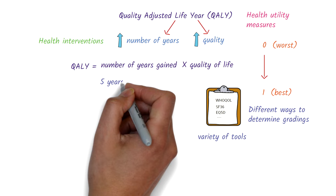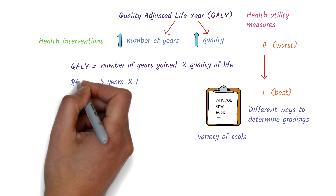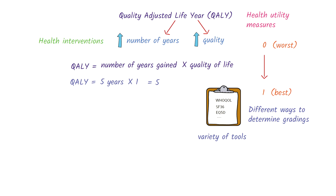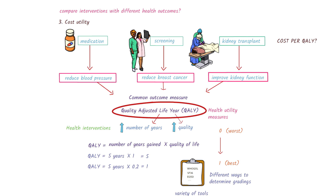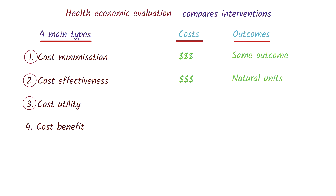Let's have a look at an example. If an intervention leads to a person living 5 years in perfect health — a health utility of 1 — then the number of QALYs gained is 5. Similarly, if an intervention leads to a person living an extra 5 years but with a quality of life of 0.2, then the QALYs gained is 1. Now that we have a common outcome measure — a QALY — we can compare the cost per QALY across different interventions. A cost-utility analysis compares the cost per utility measure, such as a QALY, for different interventions.